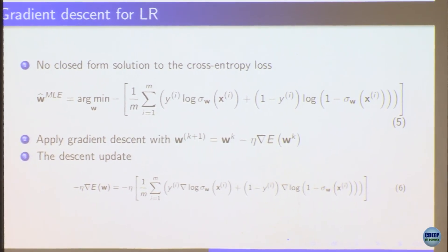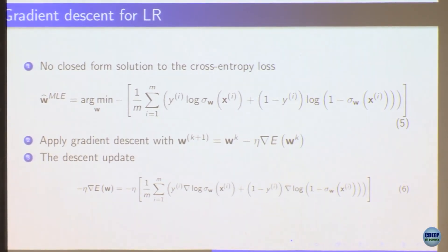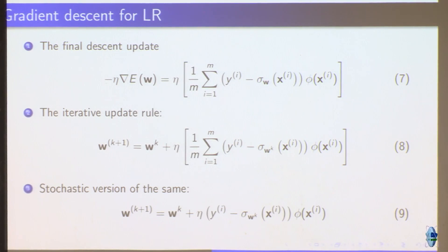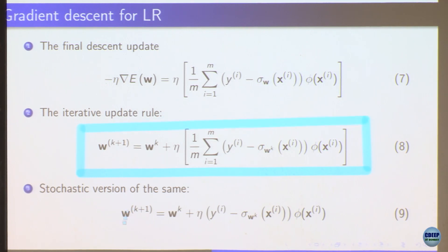As far as gradient descent is concerned, there is no closed form solution so we resort to gradient descent. This is a cross entropy loss — it is an argmin over the negative of this component. You can write down the gradient descent update. The stochastic version evaluates on one example at a time.